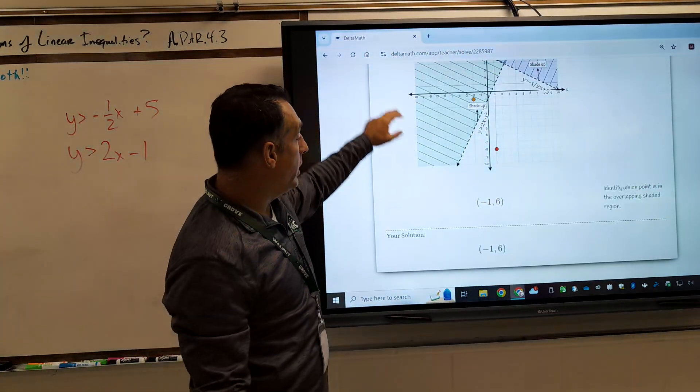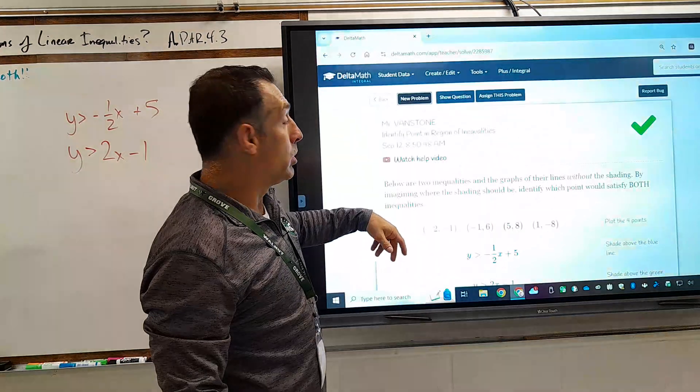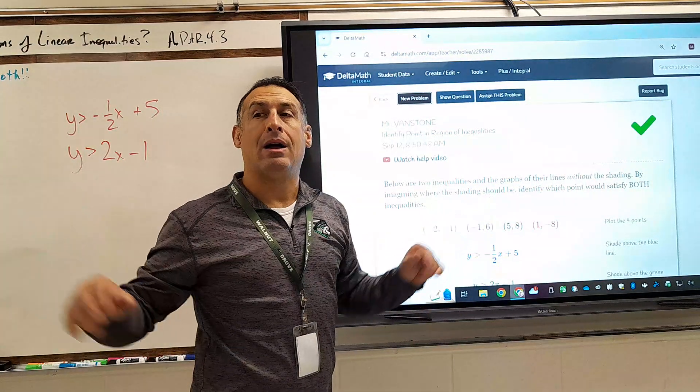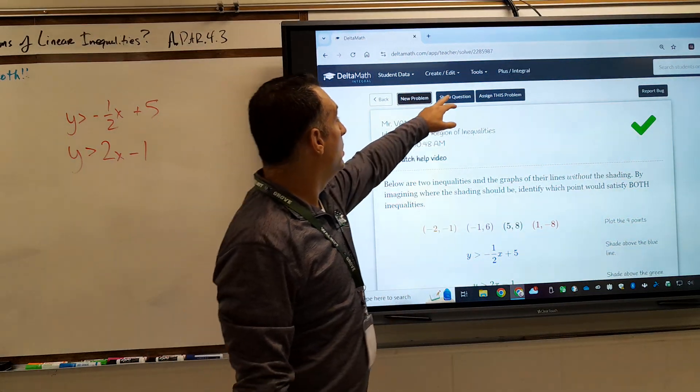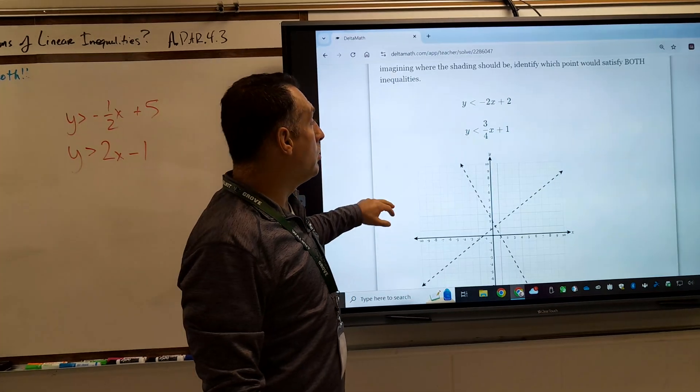That's the darker, double-shaded region. Those are the only actual answers for the system in here, in this spot. As we were good, it was negative 1, 6. We're good to go. Does everybody have a mild understanding, a little bit of an understanding?